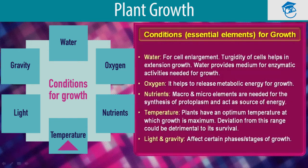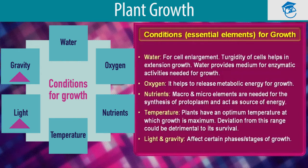Then comes temperature. Plants have an optimum temperature at which growth is maximum — meaning at some temperature, growth is seen to be maximum. Deviation from this range could be detrimental to the plant's survival. Then come light and gravity, which affect certain phases or stages of plant growth. These are the six essential elements required for plant growth and development. Let's see each one in detail.